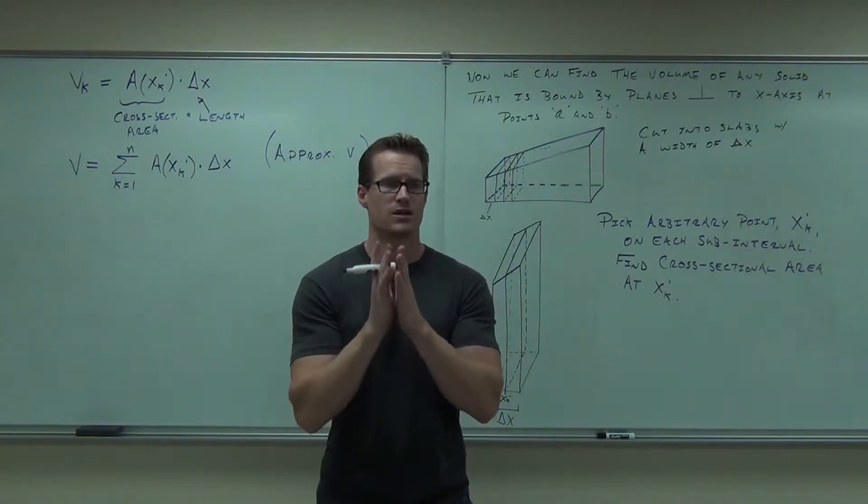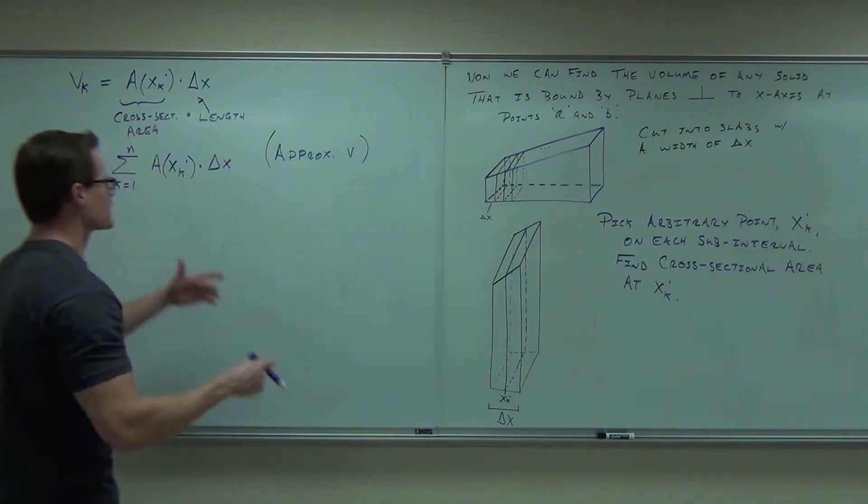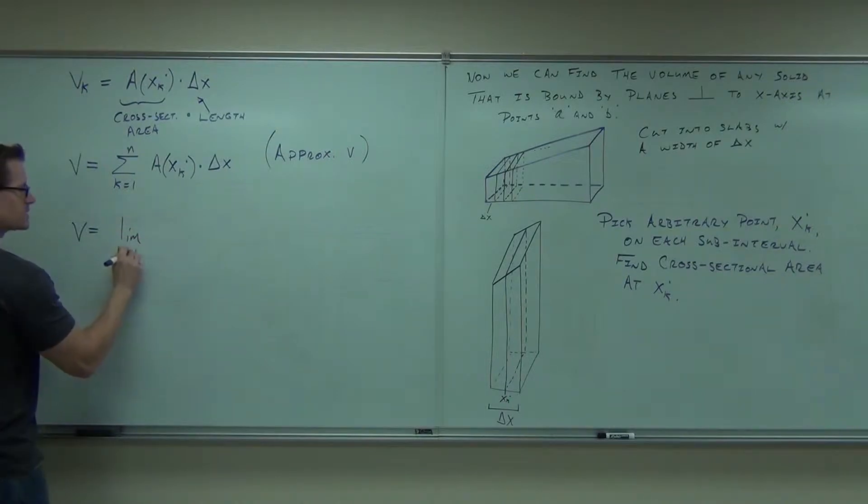It's not going to be an approximation anymore. It's so small that that's going to be exactly what the volume is. So yeah, exactly, take a limit. So this is an approximation. How I make it exact is I go, all right, take a limit as n goes to infinity of this same thing that we had.